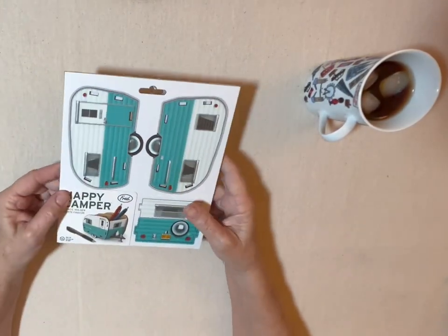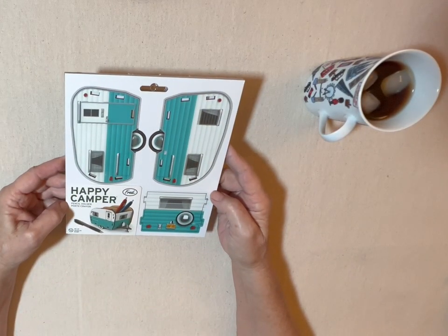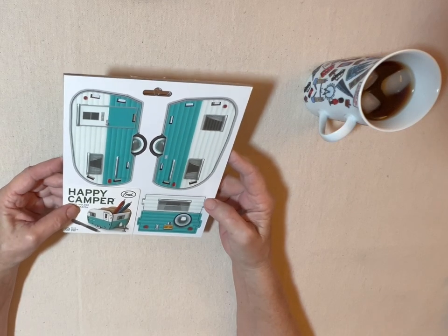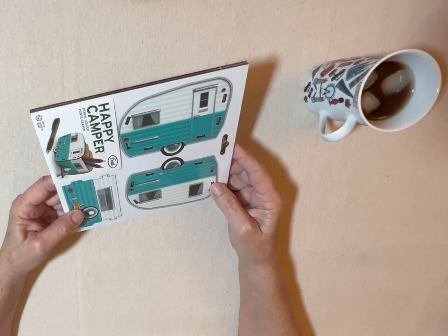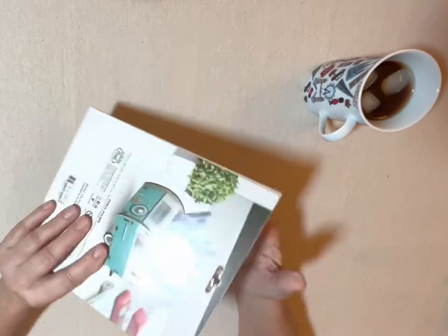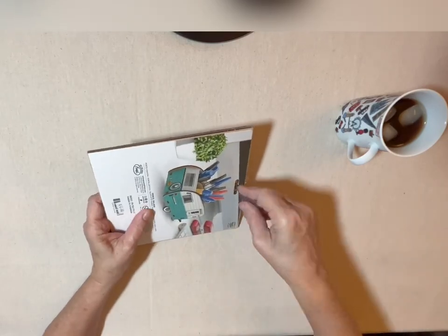I have a very cool friend who gets me very cool gifts and this is one of them. It's the Fred Happy Camper and these are cutouts. You take out the cutouts and then you assemble the pencil holder.